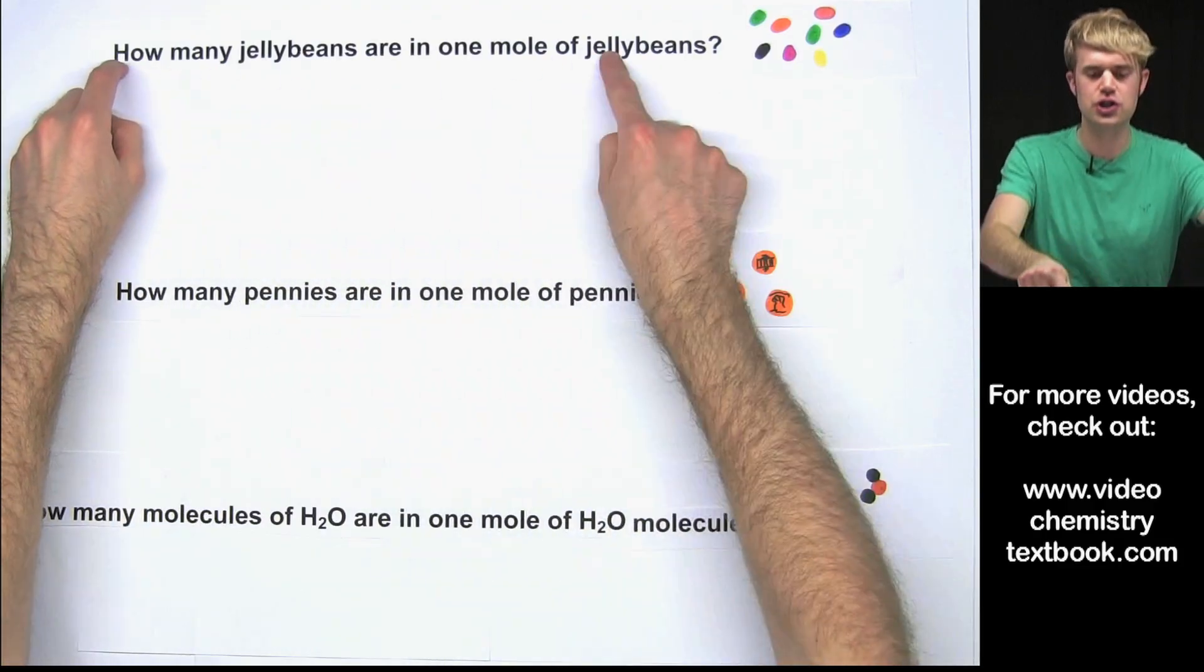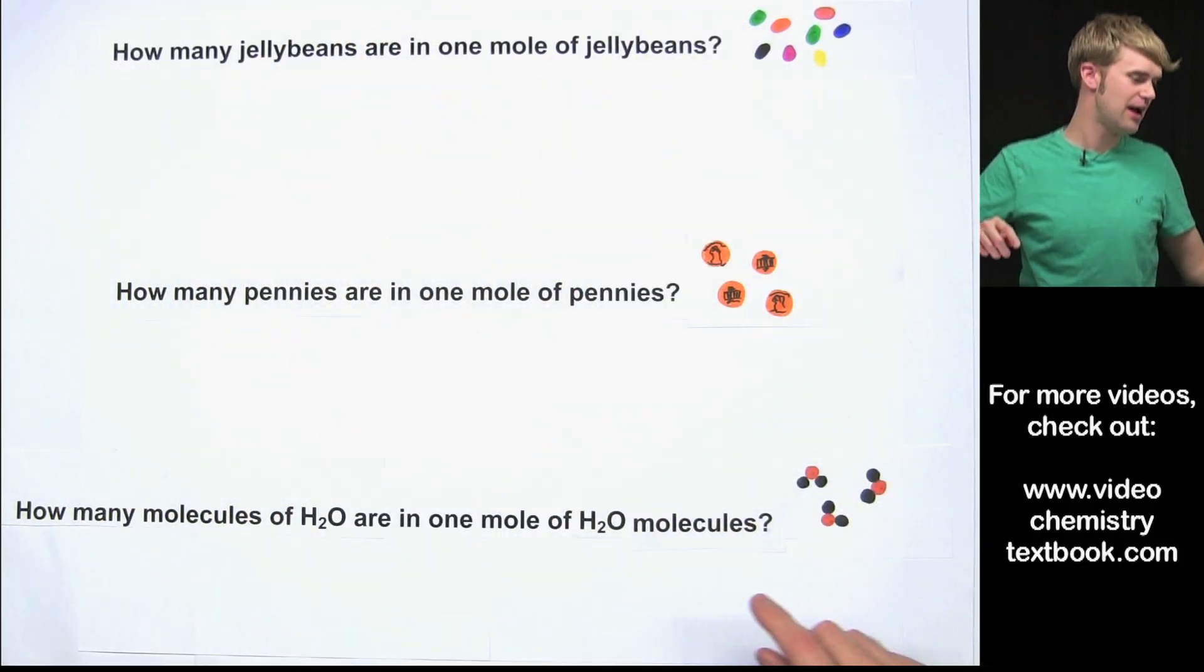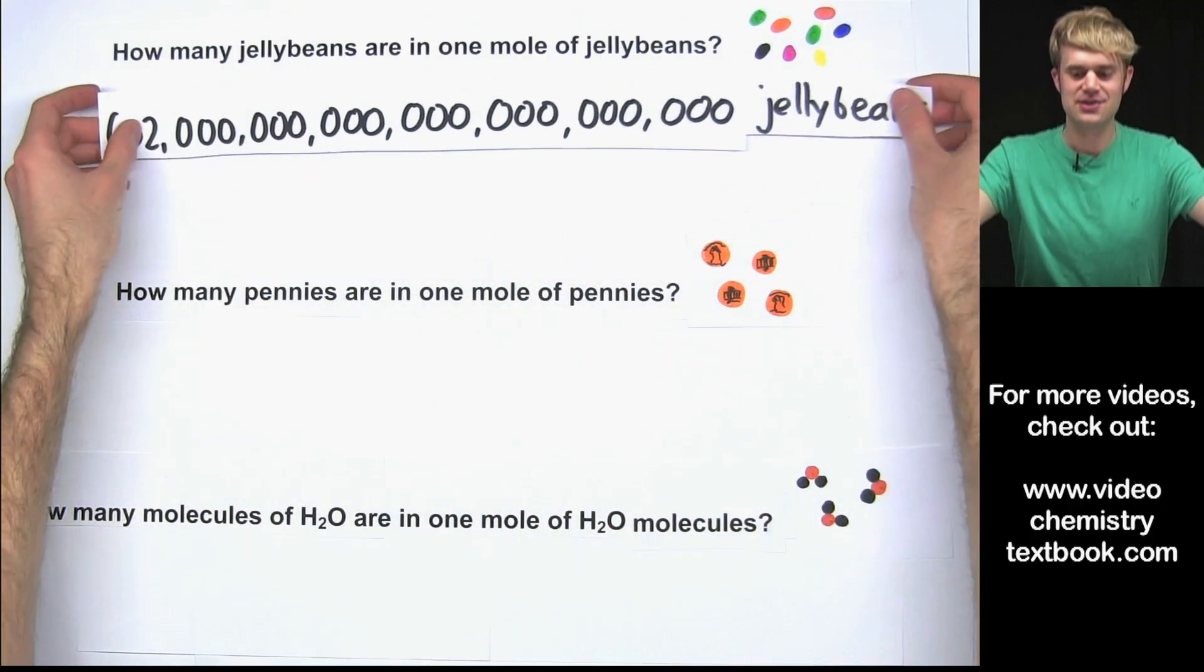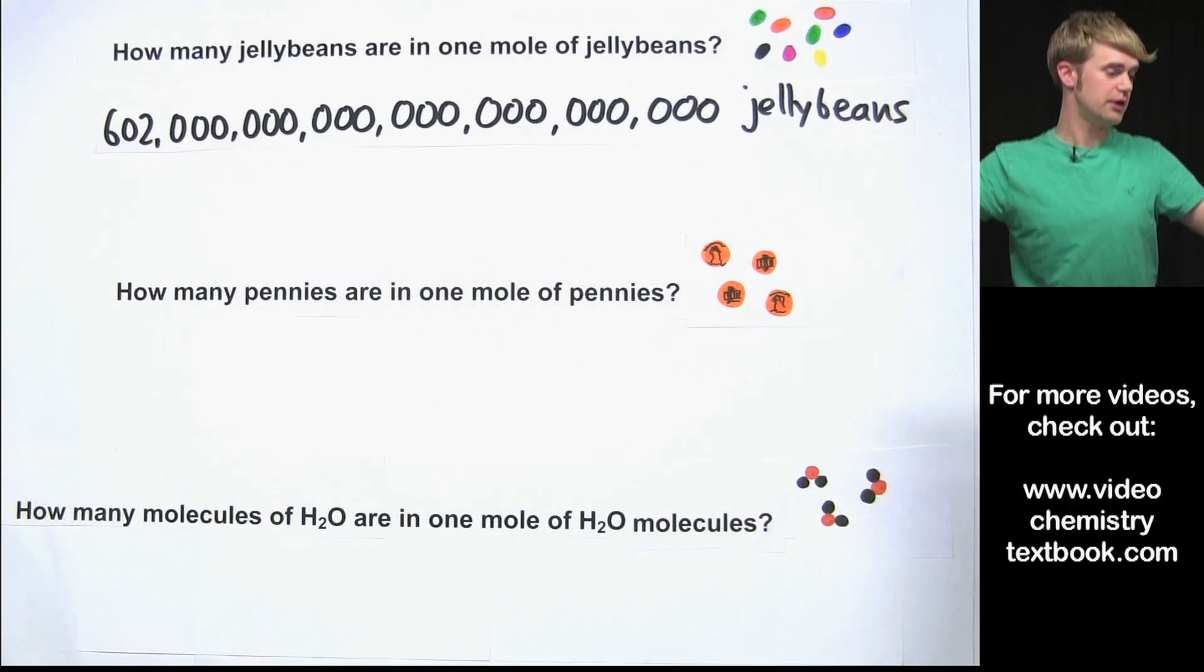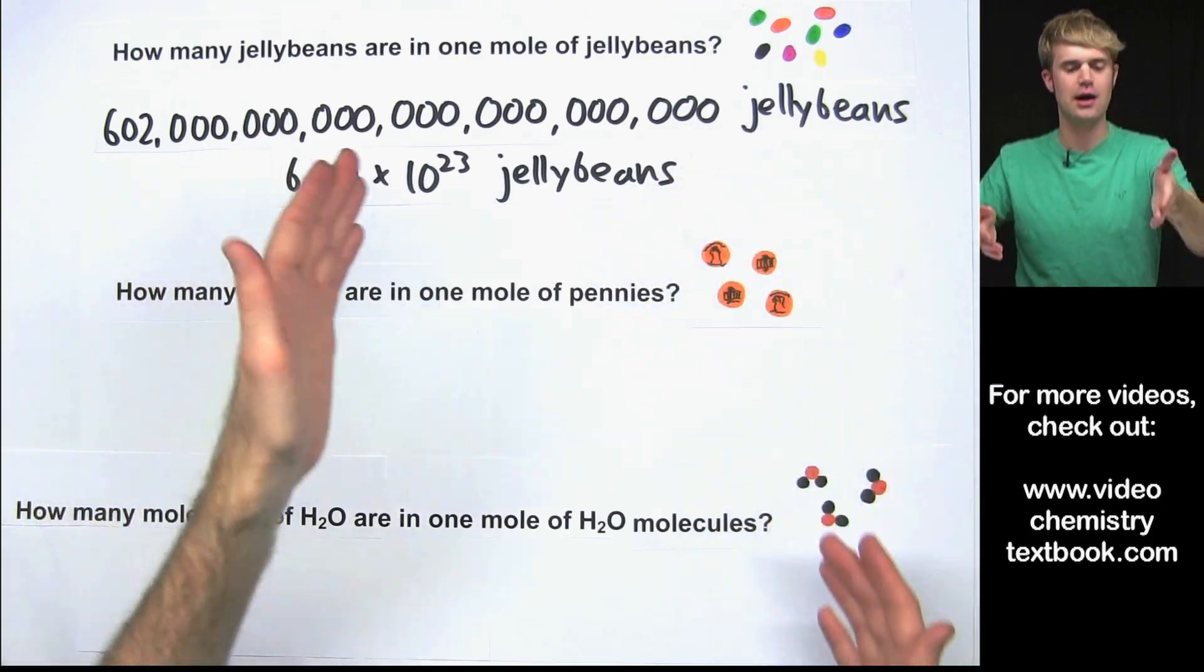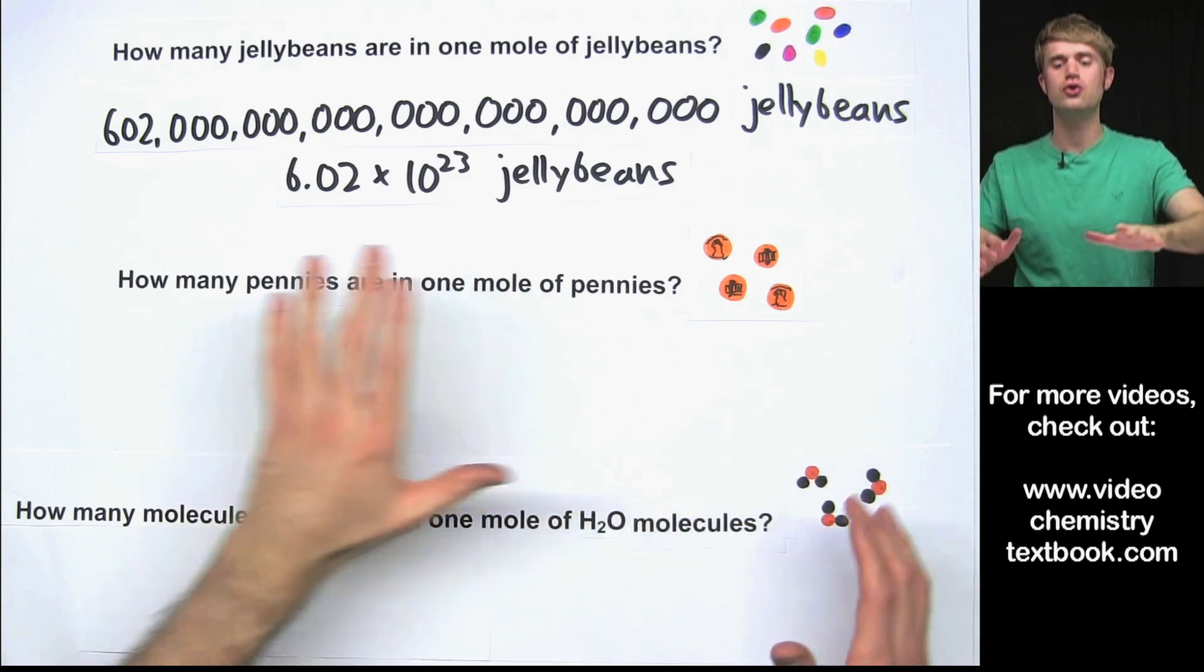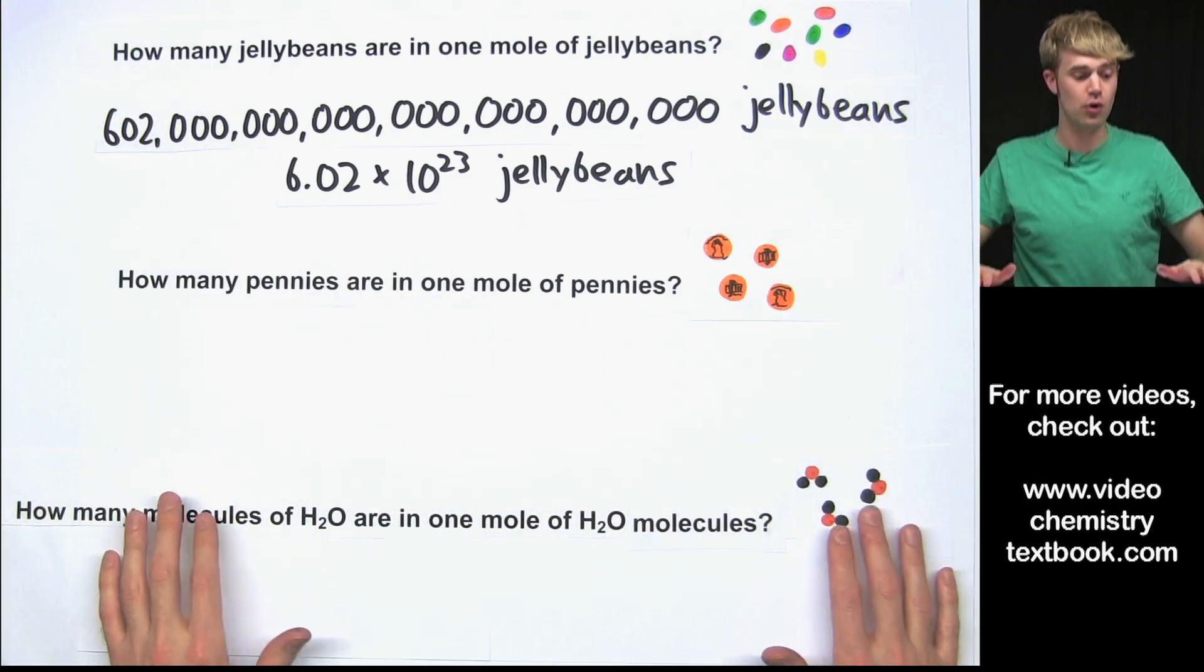So if someone asks how many jelly beans are in one mole of jelly beans, the answer is 602 hexillion jelly beans or we can abbreviate that as 6.02 times 10 to the 23rd jelly beans because there's always 602 hexillion things in a mole of anything.